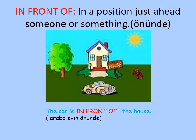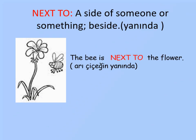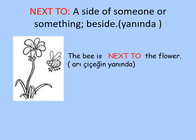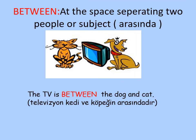'In front of' means in a position just ahead of someone or something. For example, the car is in front of the house. 'Next to,' also 'beside,' means at the side of someone or something. For example, the bill is next to the flower. Another preposition is 'between,' meaning at the space separating two people or objects. For example, the TV is between the dog and the cat.